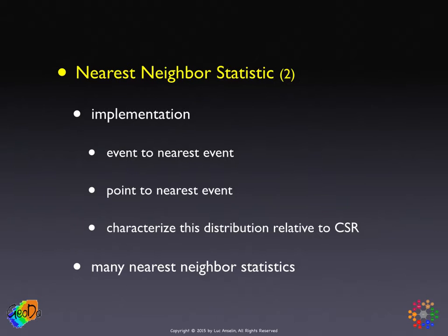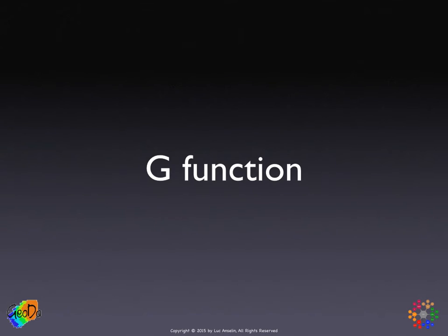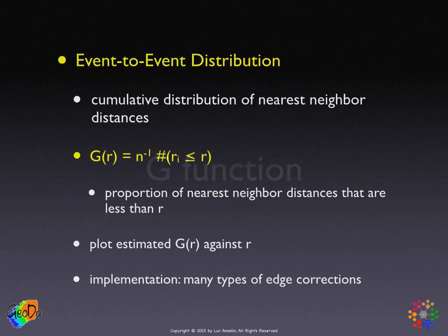The three functions we will consider here take the complete cumulative distribution. At this point in best practice, the preferred approach is not to focus on a single summary characteristic of the nearest neighbor distance distribution, but to take the full cumulative distribution. The first one we consider is the so-called G function, which is also referred to as the event-to-event distribution, dealing with the nearest neighbor distances between events.